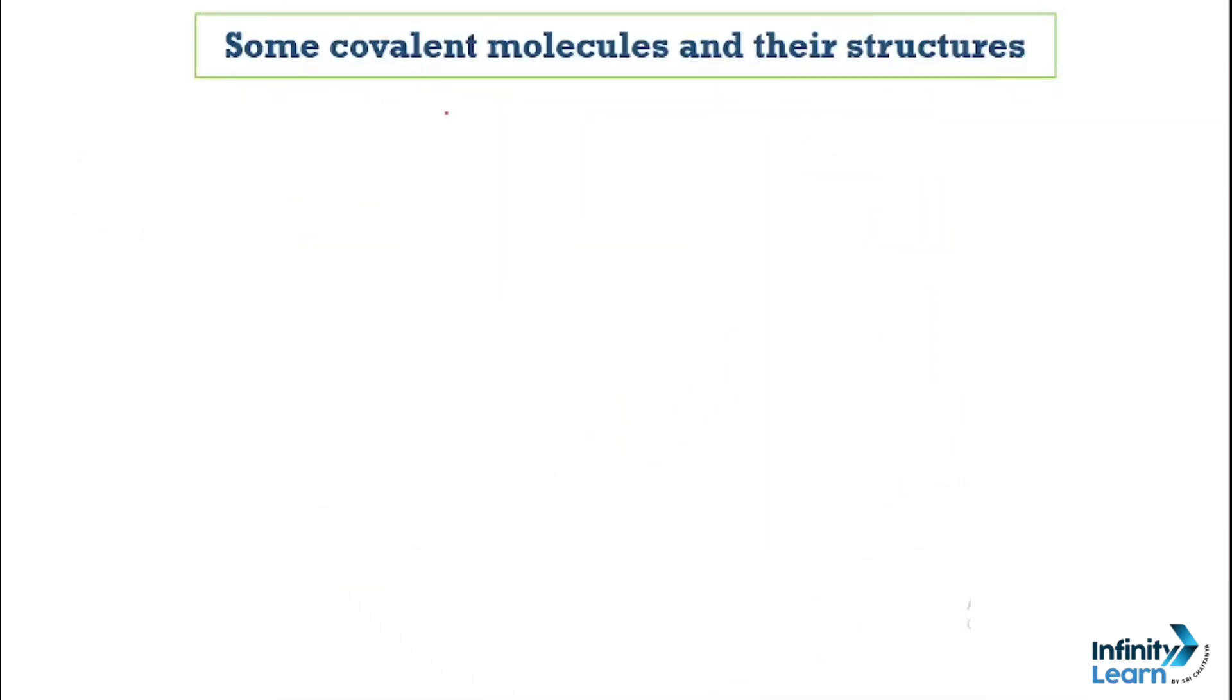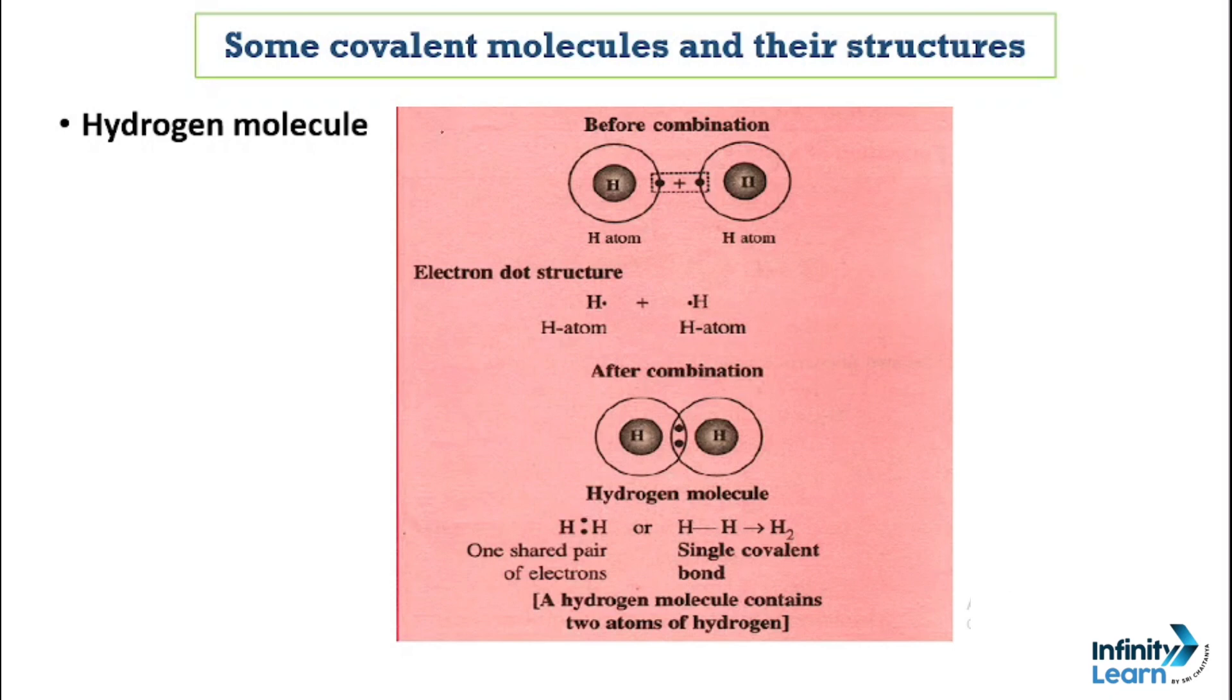So let's now talk about some covalent molecules and their structures. First, let's talk about the structure of hydrogen molecule. Hydrogen has only one electron present in its outermost shell. It needs one more electron to make a duplet. What is duplet? To make an element stable, either the value in the outermost shell should become 2, or it should become 8. As hydrogen has atomic number one, so only one electron is there. The total value is one. So in its outermost shell, there is one electron, and to make a duplet, meaning a value of 2, it needs just one more electron.